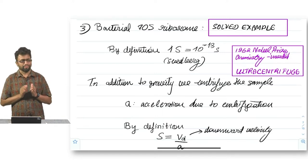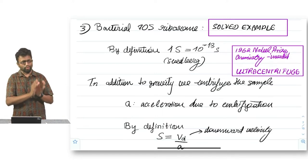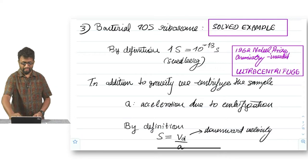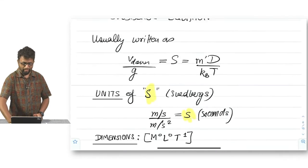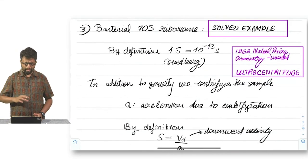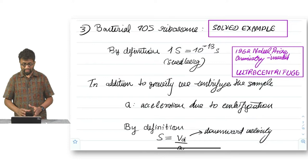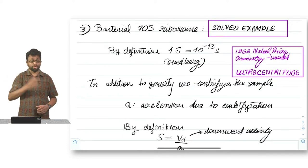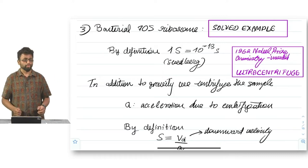By definition, we say that one Svedberg unit is equal to 10 to the power minus 13 seconds. This is a constant and this is defined from here. Now, Svedberg, by the way, in fact, obtained, was awarded the 1962 Nobel Prize for Chemistry for his invention of the ultracentrifuge.